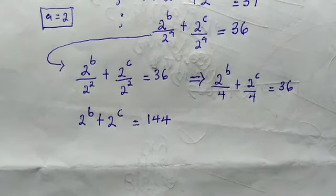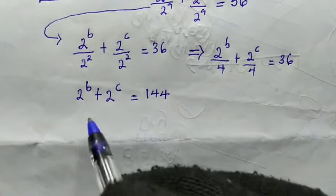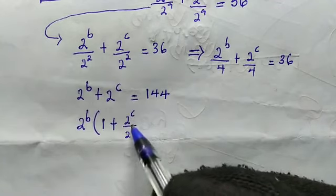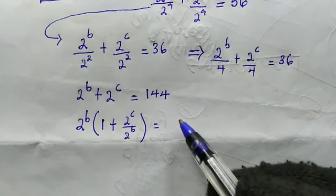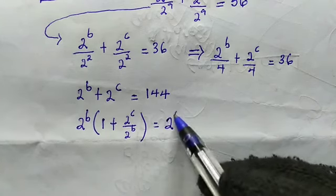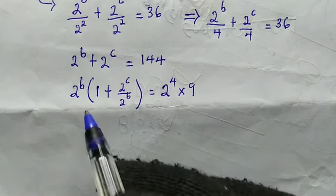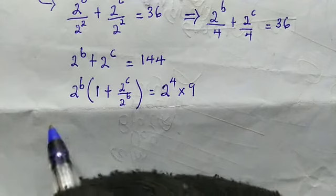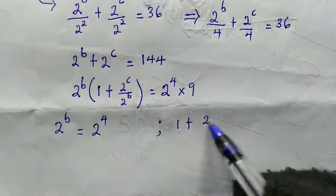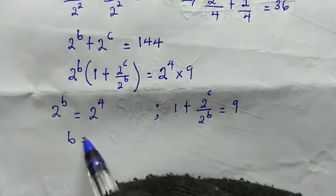Now we do the same thing we did before, but factor out 2^B. We get 2^B times (1 + 2^(C−B)) equals 144, and 144 is the same as 2^4 times 9. Making the same comparison as before — the bracketed part must be odd — we have 2^B equals 2^4 and 1 plus 2^(C−B) equals 9. So B equals 4.